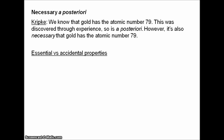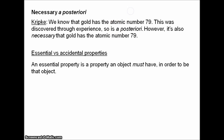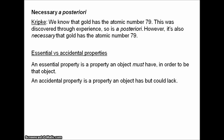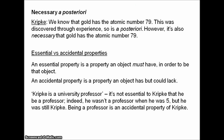This kind of argument depends on essential versus accidental properties. An essential property is a property an object must have in order to be that object. An accidental property is a property an object has but could lack without compromising its fundamental identity. Being atomic number 79 is essential to being gold, while being shiny is just accidental. Consider: 'Kripke is a university professor.' Surely that's not an essential property of Kripke — he wasn't a university professor when he was five years old, but he was still Kripke. He would continue to be Kripke even if he stopped being a professor, so being a university professor must be an accidental property.